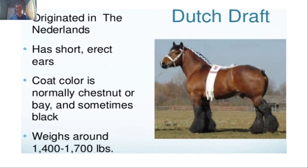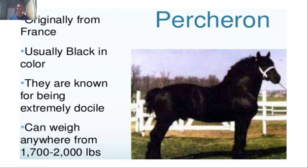Next is the Dutch Draft from the Netherlands. It has short and erect ears, and coat color is normally chestnut or bay, sometimes black. It is used for draft purposes. Next, we have the Percheron from France. They are usually black in color, known for being extremely docile — meaning gentle, kind, and easy to train. They can weigh anywhere from 1,700 to 2,000 pounds.